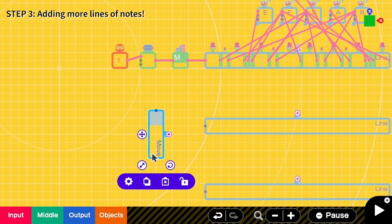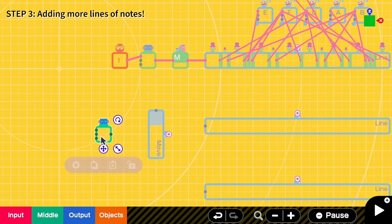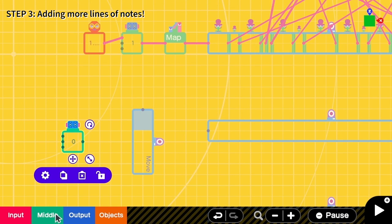Then I need a counter to count how many lines I have read. So here, meter, counter, counter. Then I need a map to map from one, two, and three to zero to one instead.